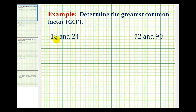In this problem, we want to determine the greatest common factor of 18 and 24, which means we want to find the largest whole number that divides evenly into 18 and 24. If you know your multiplication tables really well, you can probably look at these two numbers and determine the greatest common factor, or GCF. However, one foolproof method is to analyze the prime factors of both numbers. So let's make a prime factor tree for both 18 and 24, and then determine the greatest common factor.